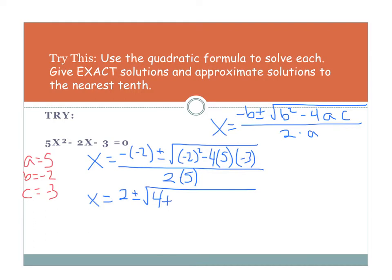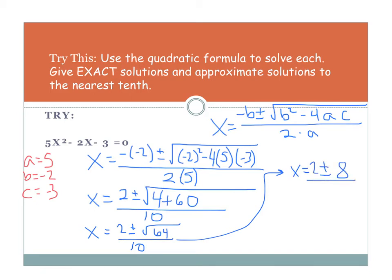Now, I'm just going to multiply 4 times 5 times 3. I'm not even going to look at the signs anymore. I've already dealt with my sign. I'm just going to worry about the numbers now. So, I have 4 times 5 is 20 times 3 gives me 60. All over 2 times 5 is 10. Keep moving. I get 2 plus or minus the square root of 64 over 10. Well, I know the square root of 64 is 8.